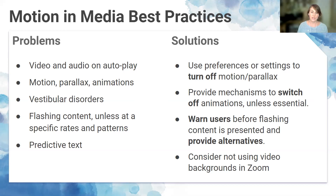Animations and moving content can cause discomfort and physical reactions as well. Even predictive text — input technology that facilitates typing by suggesting words — can be problematic. Solutions include: providing mechanisms to switch off motion and animations unless essential to the content; letting users press play on videos instead of having them autoplay; providing warnings before flashing content; and avoiding video backgrounds in Zoom or other meeting apps to be more inclusive of those with vestibular or motion sensitivities.